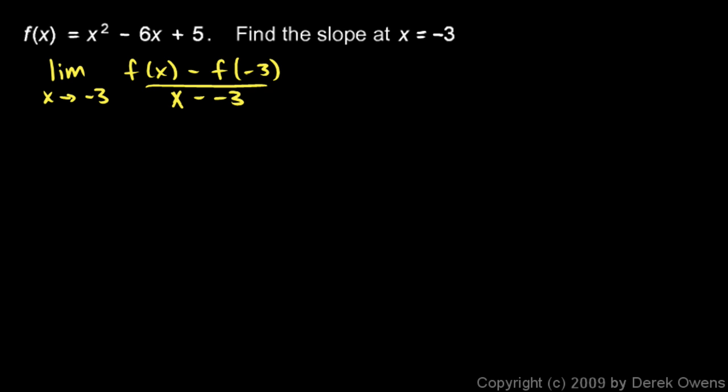So we're going to need to find f of negative 3. So let's figure that out. We need that to plug in right here. So f of negative 3 is going to be negative 3 squared minus 6 times negative 3 plus 5. And what's that? 9 plus 18 plus 5. 9 plus 18 is 27 plus 5 is 32.